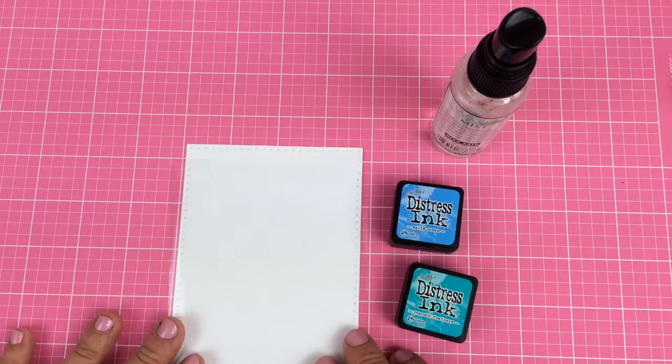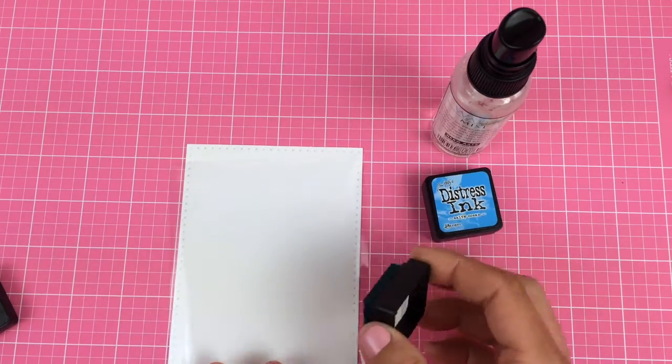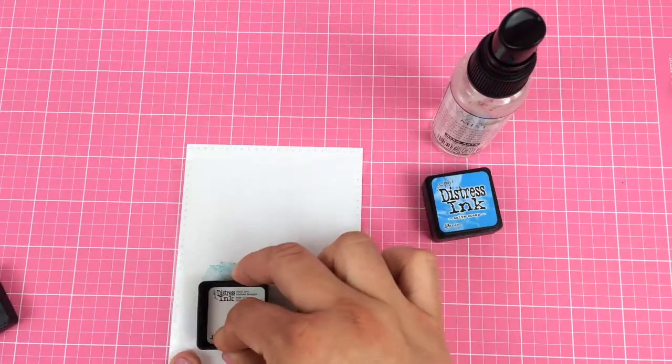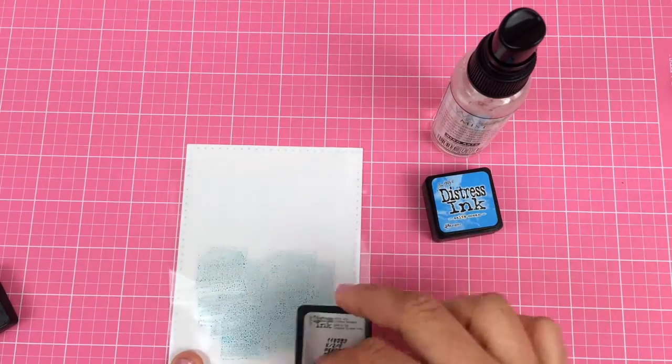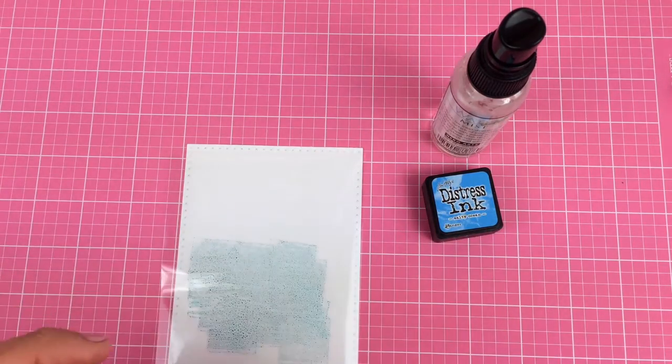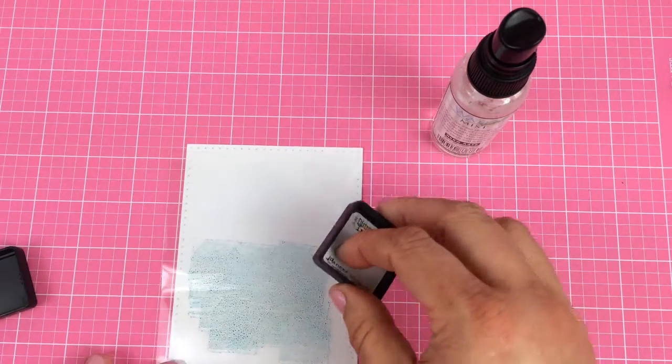You're going to lay that on top of your white piece. You can kind of see where it goes. Then you're going to take your first distress ink and just kind of dab it wherever you want it. There's really no rhyme or reason to this. I'm going to put this one towards the bottom of the panel.